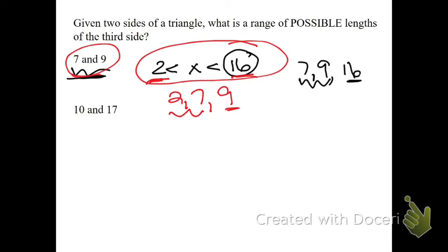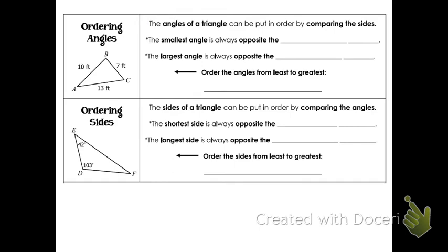So try the next one. 10 and 17. Add them up, we get 27. Subtract, you get seven. So the third side has to be a number between seven and 27. So now you guys can hit pause and do some of the problems, or the next part of the lesson is pretty easy too. If you want to just keep on going, it's up to you.